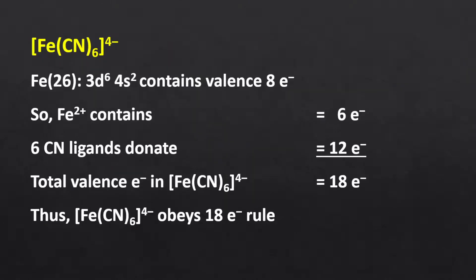Now let me illustrate some more examples. Hexacyanoferrate ion: the atomic number of iron is 26, so the electronic configuration of its valence shell is 3d6, 4s2. The oxidation state of iron in this complex is +2. Thus, there are 6 valence electrons. Also, each cyanide ion will donate 2 electrons, so overall 12 electrons from 6 ligands. Consequently, the total valence electron count in this complex is 18, meaning this complex follows the 18 electron rule and is stable.